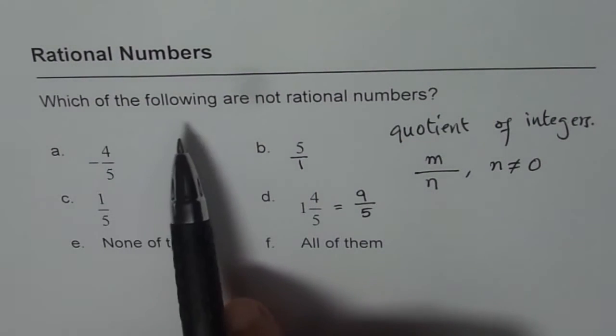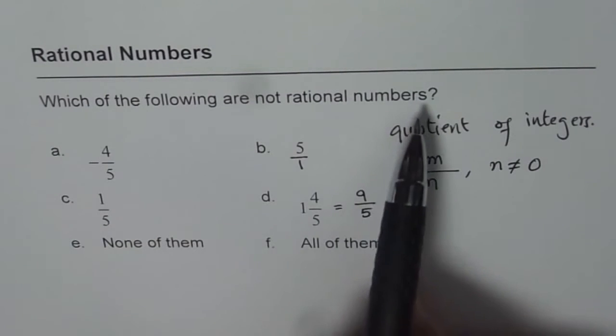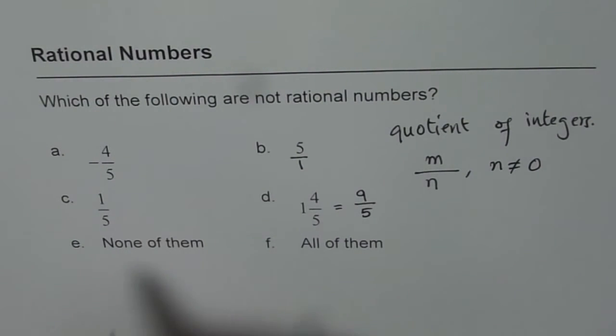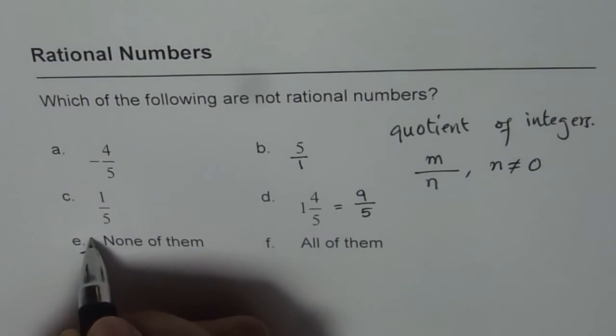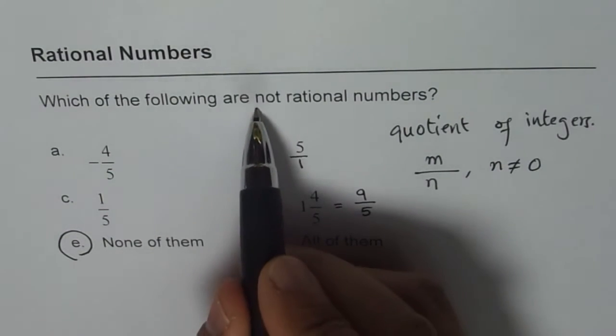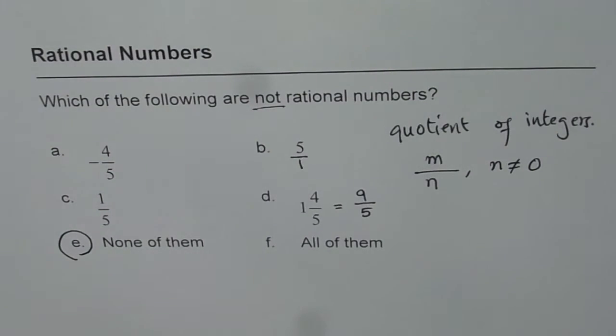So the question is, which of the following are not rational numbers? They all are rational numbers. So, none of them.